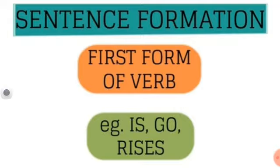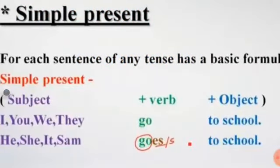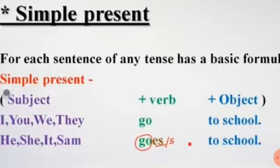For example: is, go, rises — these are all first forms of verbs. The basic formula for Simple Present Tense is subject plus verb plus object. With plural subjects — I, you, we, they — the first form of the verb is used. But with singular subjects — he, she, it — we always add S or ES with the first form of the verb. Like: he goes to school, she goes to school, it goes to school, or Sam goes to school.